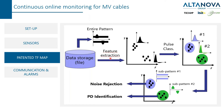The logic behind this is: acquire the entire pattern, plot all the clusters in the TF map, identify what is noise and what is partial discharge, remove the noise, and focus only on the partial discharge.